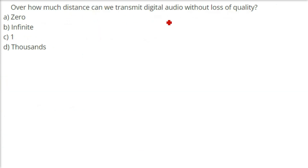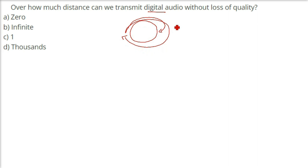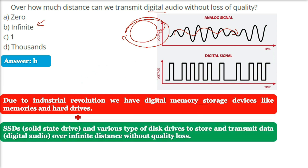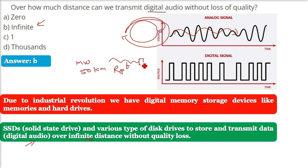How far can we transmit digital audio without loss of quality? We can send sound clearly to the other end of the world and even thousands of kilometers beyond the Earth's surface. Digital audio can be transmitted without loss of quality to an infinite distance. The only limitation is available resources — disk space, communication channels, and instruments. Without resource limits, digital audio suffers no quality loss over distance.